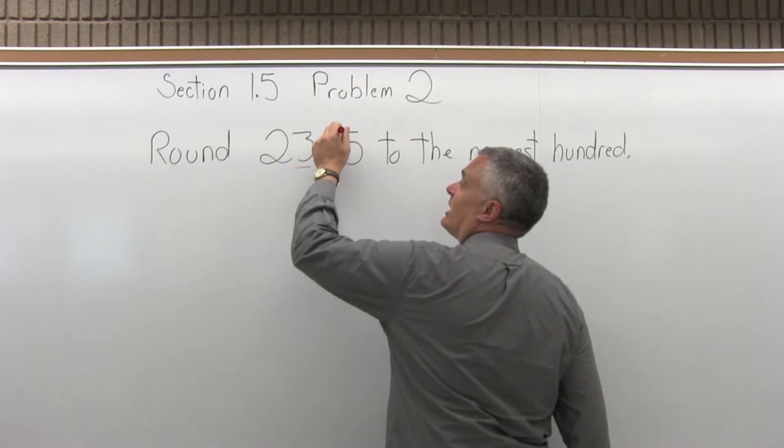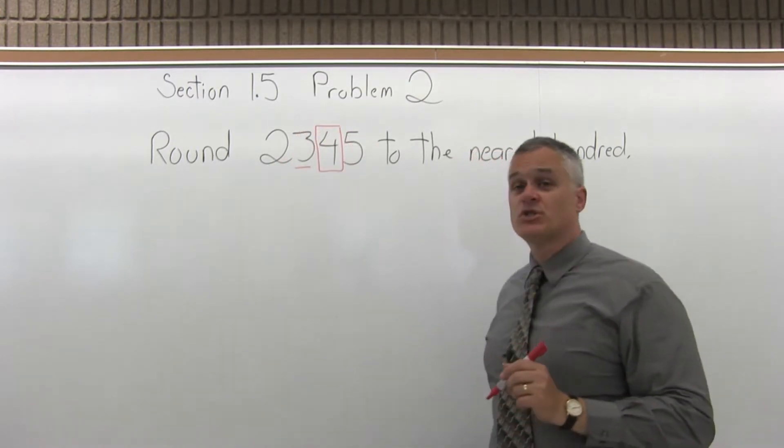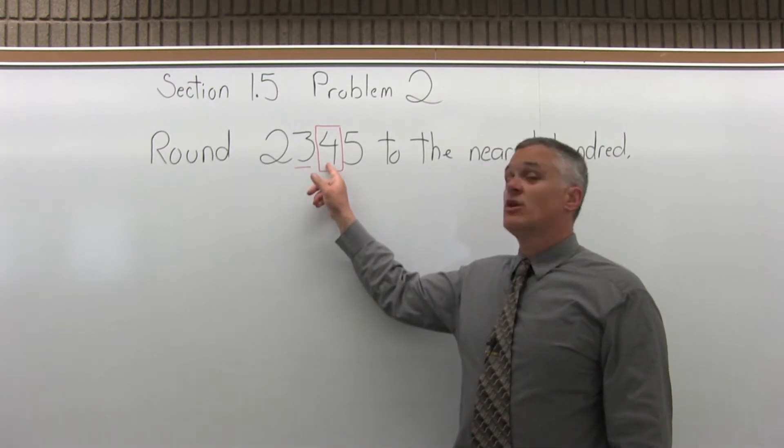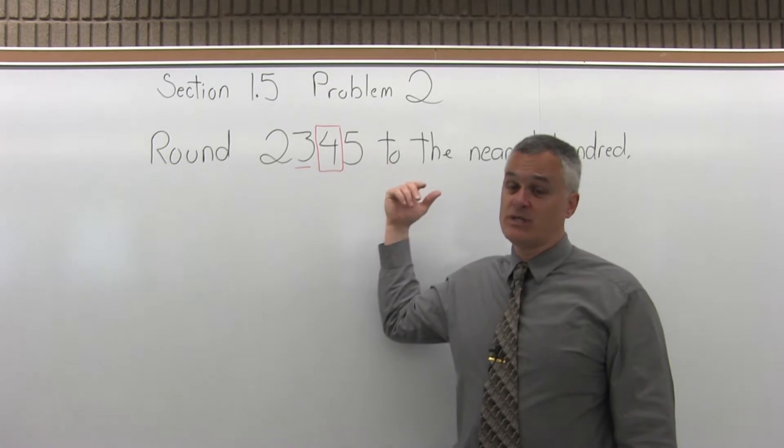In order to do that, you want to look at the digit that is one position to the right, which is a four. The rule is if it's zero, one, two, three, or four, you turn it into a zero and everything after it's a zero.